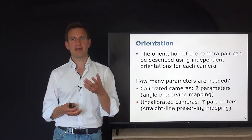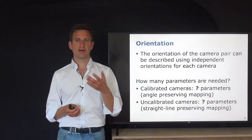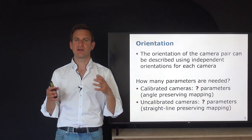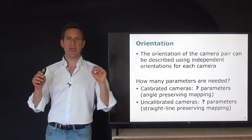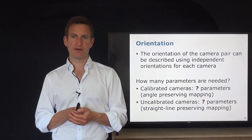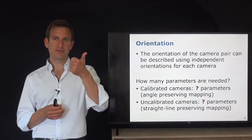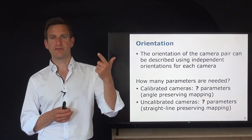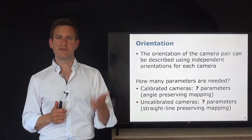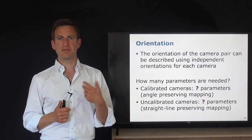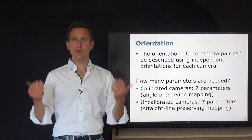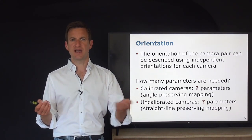For a calibrated camera, the only free parameters are the orientation of each camera — where it is looking — and the position, i.e., where the projection center is. That is three for translation and three for rotation per camera. For both cameras together that is 3+3+3+3 = 12 parameters — two poses, two position and heading information.